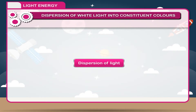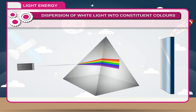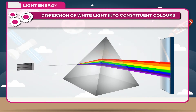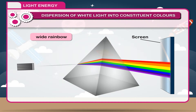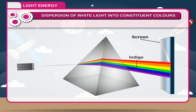Activity — Dispersion of light: Take a prism and allow a narrow beam of light to fall on it. Place a white screen on the other side. You will notice that a band of colours appears on the screen. The band of colours resembles a white rainbow. The order of colours from the base of the prism is: violet, indigo, blue, green, yellow, orange, red.